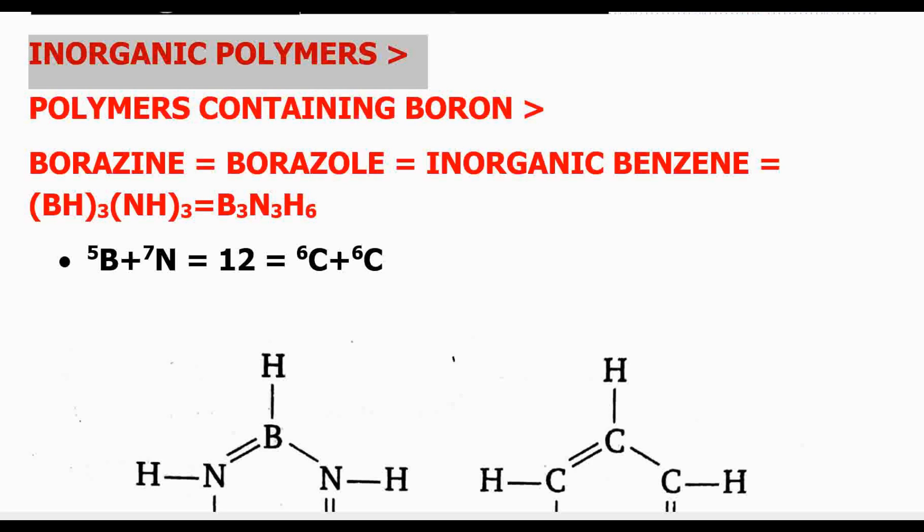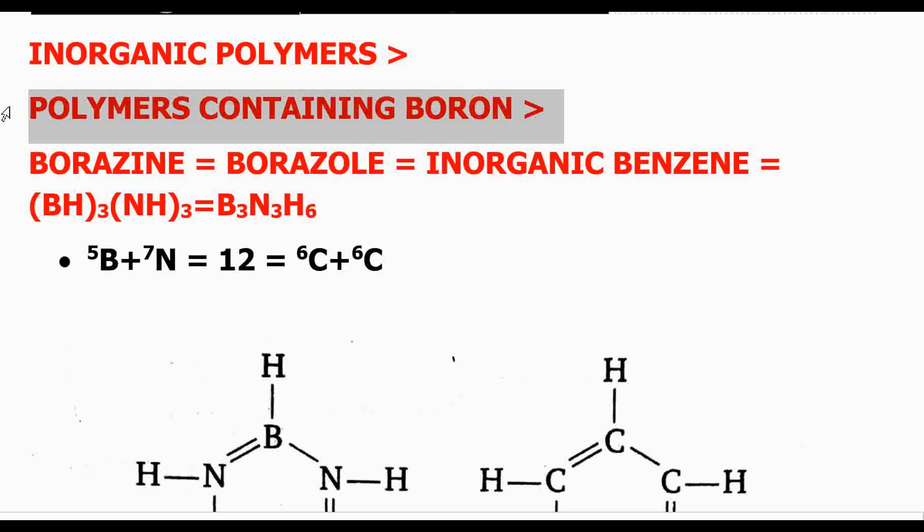Now inorganic polymers: organic polymers are those that have carbon in their backbone or skeleton. But if the polymers do not have carbon in their backbone or skeleton, then they are known as inorganic polymers. There are a variety of inorganic polymers. The compound we are going to discuss today contains boron and nitrogen, and this borazine or borazole is an important compound in the class of inorganic polymers containing boron.